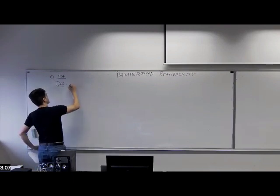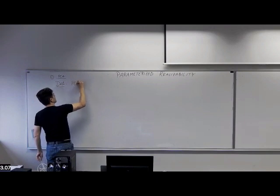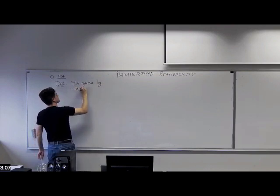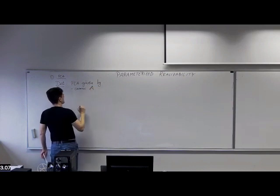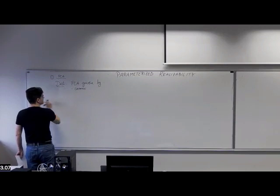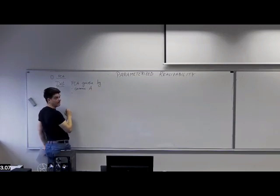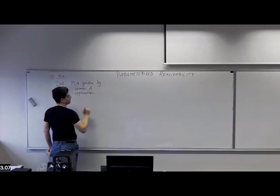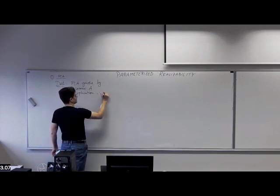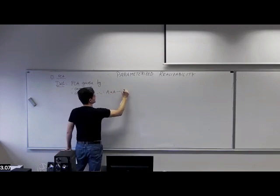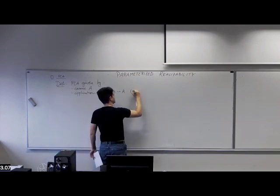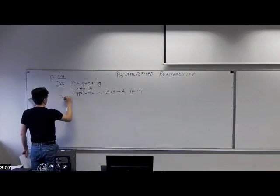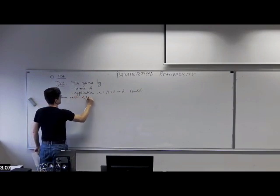A PCA is given by a carrier set A, and an application operation — this is called application, which we write as a dot. Using Agda notation, it takes two elements of A and returns an element of A, and it's partial, so it may be undefined. There exist special elements called K and S satisfying some conditions.